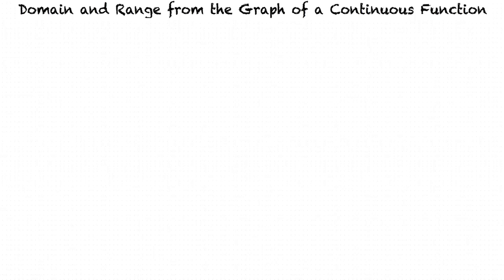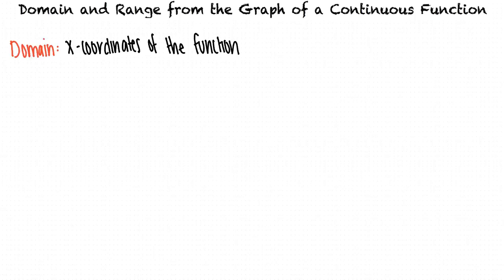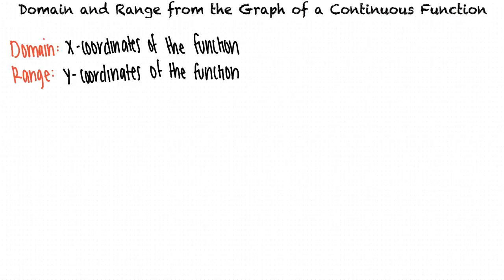Domain and range sounds familiar, but let's go over what those mean quickly. The domain is the set of all numbers that appear as x-coordinates of points on the graph, and the range is the set of all numbers that appear as y-coordinates of points on the graph. In interval notation, we use a bracket to indicate that the endpoint is included in the set of numbers, and a parentheses to indicate that the endpoint is not included.